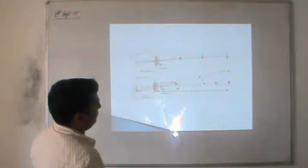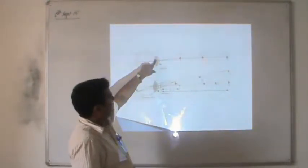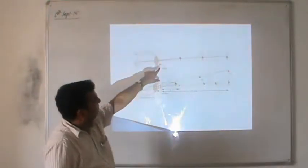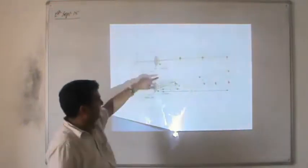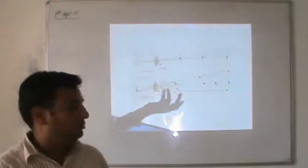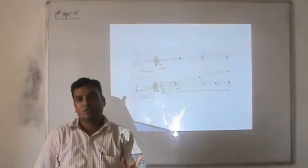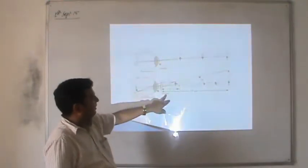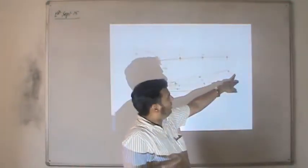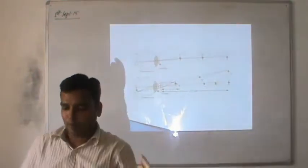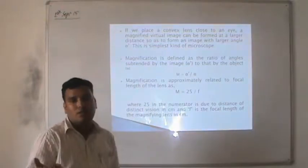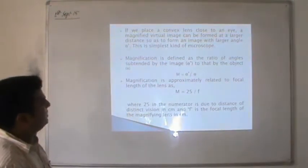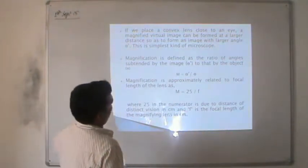This is the basic working principle of the human eye. We have the human eye, the crystalline lens, and the object. When an object is placed here, its image is formed on the retina and we get an enlarged image. But if I put a convex lens - a simple magnifying glass like jewelers use - over here, then the image formed is much bigger. By using a simple magnifying glass or convex lens, it is possible to increase the size of the image formed. If you place a convex lens close to the eye, a magnified image will be formed at a larger angle θ'. This is the simplest kind of microscope.